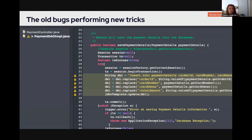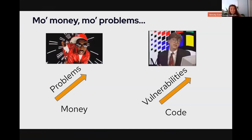Part of the reason old bugs keep performing new tricks: SQL injection came out in about 1998 — guess when the fix came out? Also 1998. So we're looking at about 23 years of the same vulnerabilities appearing again and again. This problem isn't going away because, to quote Notorious B.I.G.: more code, more vulnerabilities.